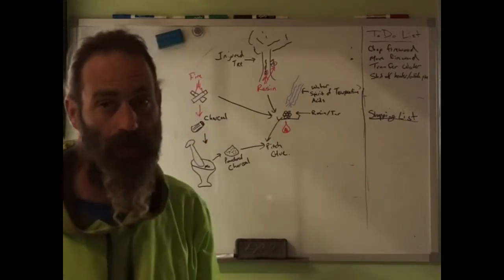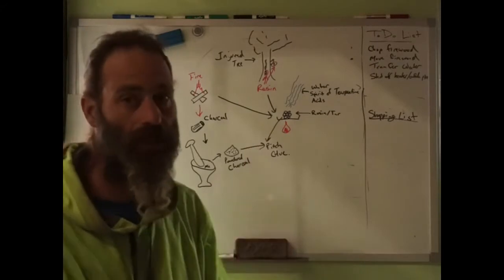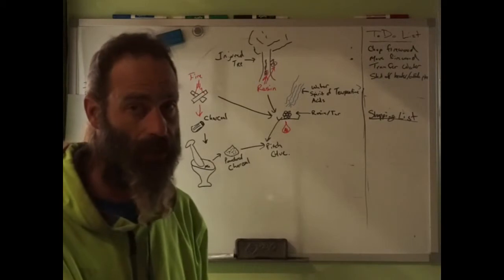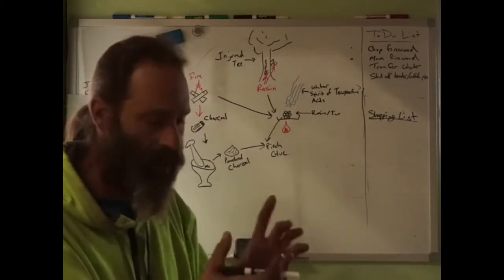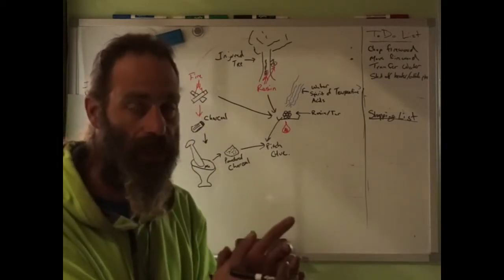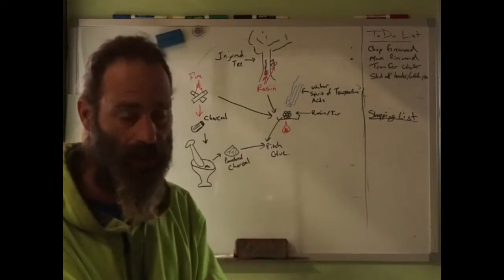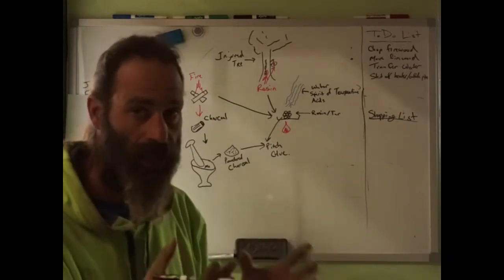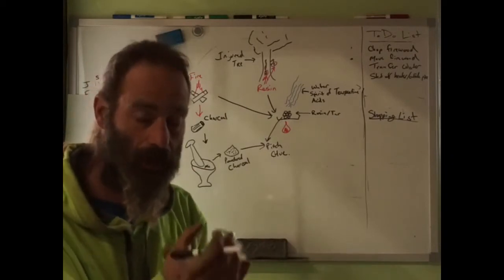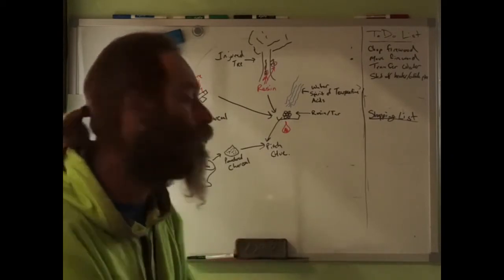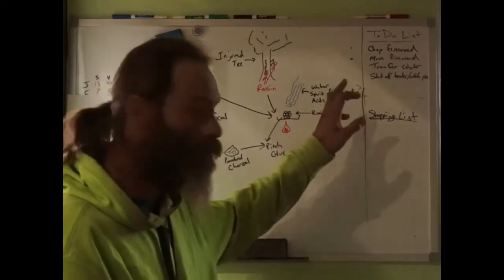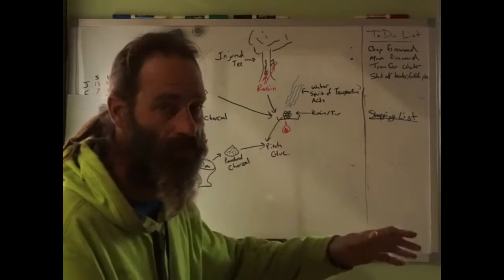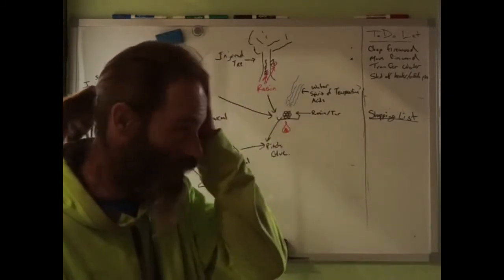And so as this stuff dries out, you'll notice it'll harden over time. So you'll find chunks on a tree that are just hard as a rock. And it's basically started to produce a rock called amber. So if the rock, if that chunk, like, hangs around long enough without being disturbed and it gets buried in the soil for who knows how many years, eventually that'll harden up so much that it'll fossilize and turn into amber.